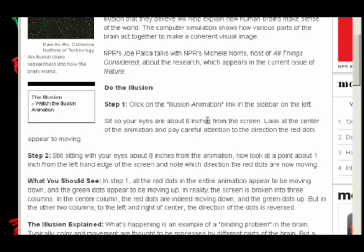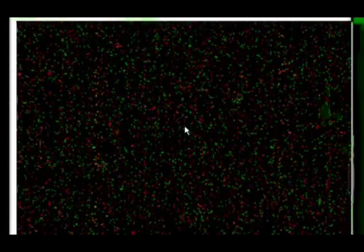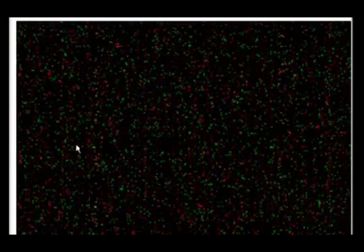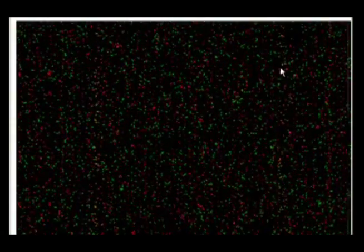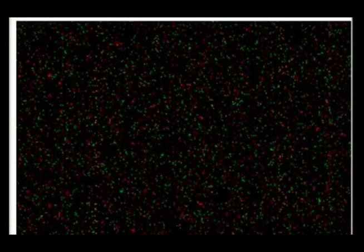And pay careful attention to the direction the red dots appear to be moving. So let's watch the animation. I don't know how this is going to turn out in this video, so I'll put the link to it. So I'm looking here in the centre, but concentrating on all of the red dots, and they all appear to be moving downwards. All of the red dots appear to be moving downwards as I keep my attention here, I keep my vision focused here. Okay, very good.